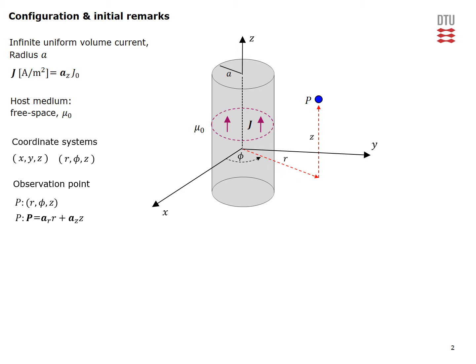Introducing two coordinate systems — rectangular X Y Z and circular cylindrical R phi Z — the observation point has coordinates given by these systems, or alternatively by a position vector. The volume current density is along the wire in the Z direction. We first postulate that for this infinite uniform volume current density, the B field will only have a phi component, and its magnitude will only depend on the radial coordinate R.